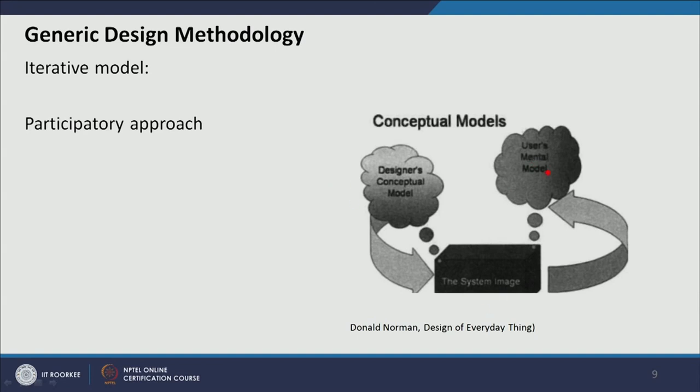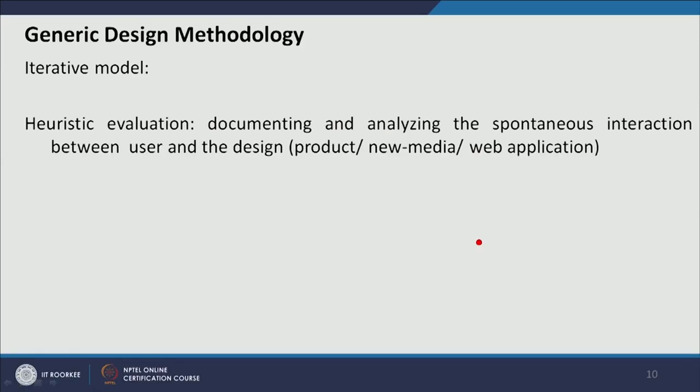There is actually a triangle of design, designers, and user — any of these three can come first. The design should be preceded by the designer's conceptual model, but either the user's mental model or the designer's conceptual model can come before the other. Heuristic evaluation involves documenting and analyzing the spontaneous interaction between user and design — how users freely interact within the environment of a design.